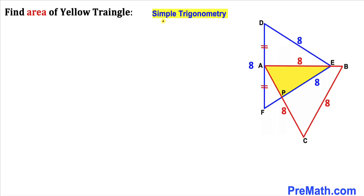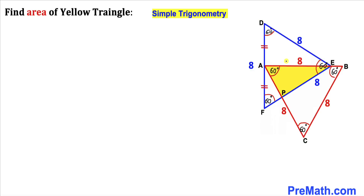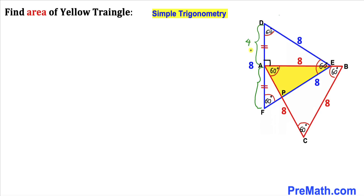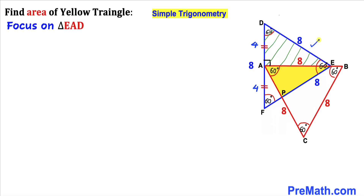We are going to use basic trigonometry. Since we are dealing with equilateral triangles, all interior angles for both triangles are 60 degrees each. Moreover, line segment AE is the median, so therefore this angle is 90 degrees. Since the whole length is eight units, line segments AD and AF are four units each.